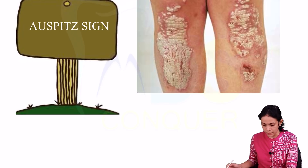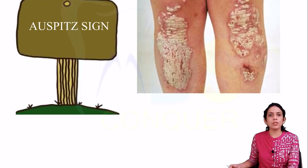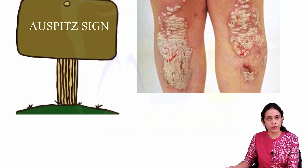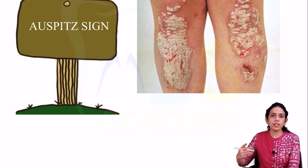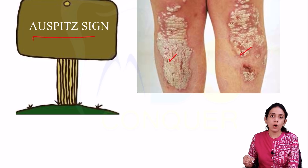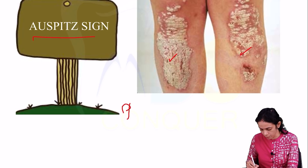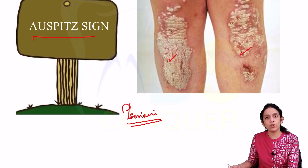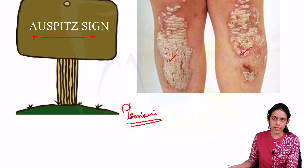Next is the Auspitz sign, seen with psoriasis. Here you can see scales on the skin, and when the successive layers of scaly skin are removed, you can find bleeding points. This is the Auspitz sign, seen in patients suffering from psoriasis.